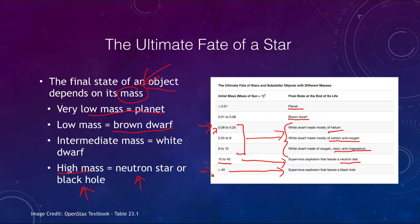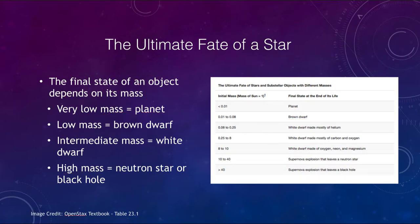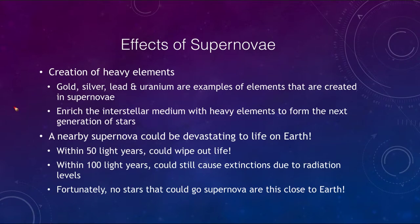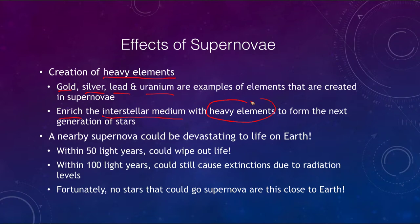What are some of the effects of a supernova explosion? First, it creates heavy elements — gold, silver, lead, and uranium are examples of elements created in a supernova explosion. Not only does it create them, but it also enriches the interstellar medium, giving more heavy elements to the next generation of stars. The first generation of stars would have had only hydrogen and helium; later generations gained carbon, oxygen, and silicon, and as supernovae continue to enrich that medium, we get gold, silver, lead, and uranium as well.